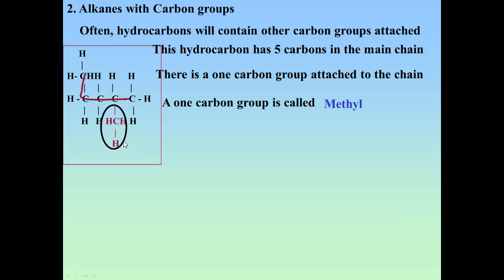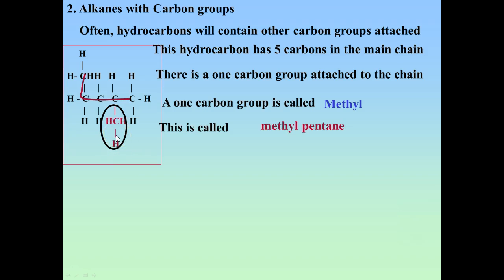Now let's treat this just like we would a chloro group. Since it's on the second carbon, counting from the back end — one, two, three, four, five carbons — it's pentane with a methyl group on carbon number two. So this is 2-methylpentane, following the same rules, except instead of chloro or bromo, we've got methyl.